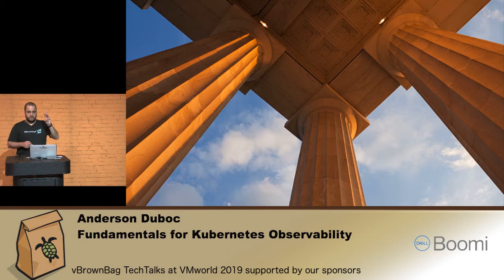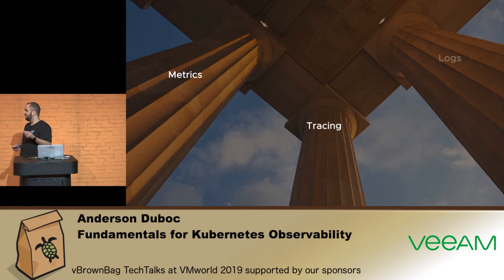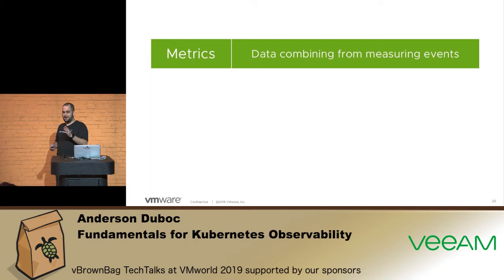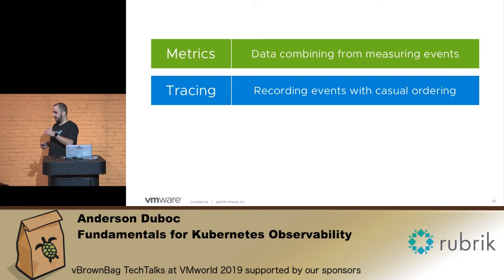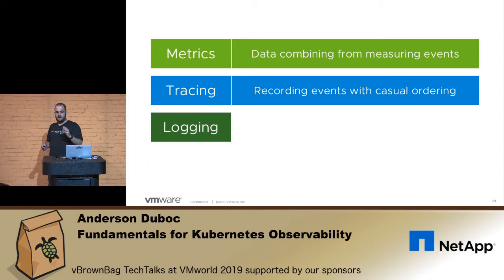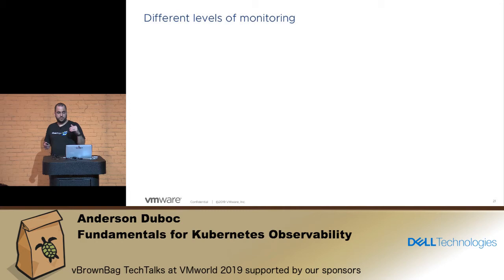So I have three pillars of observability: metrics, tracing, and logs. Metrics are data combined from measuring events. Tracing are recorded events with causal ordering — so we have an order when you're looking at tracing. And logging is recording events.